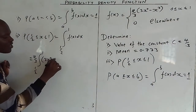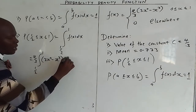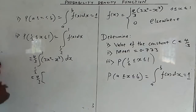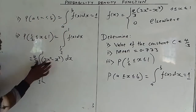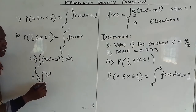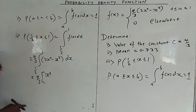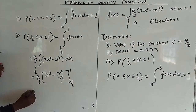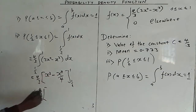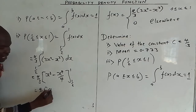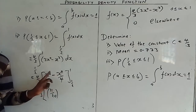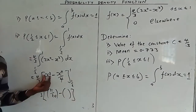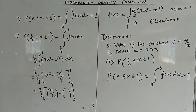Integrating (3x² - x³), we get x³ - x⁴/4, evaluated from 1/2 to 1. The upper limit at x = 1 gives 1 - 1/4 = 11/20 as found earlier. For the lower limit, substituting x = 1/2: (1/2)³ - (1/2)⁴/4 = 1/8 - 1/64 = 8/64 - 1/64 = 7/64.